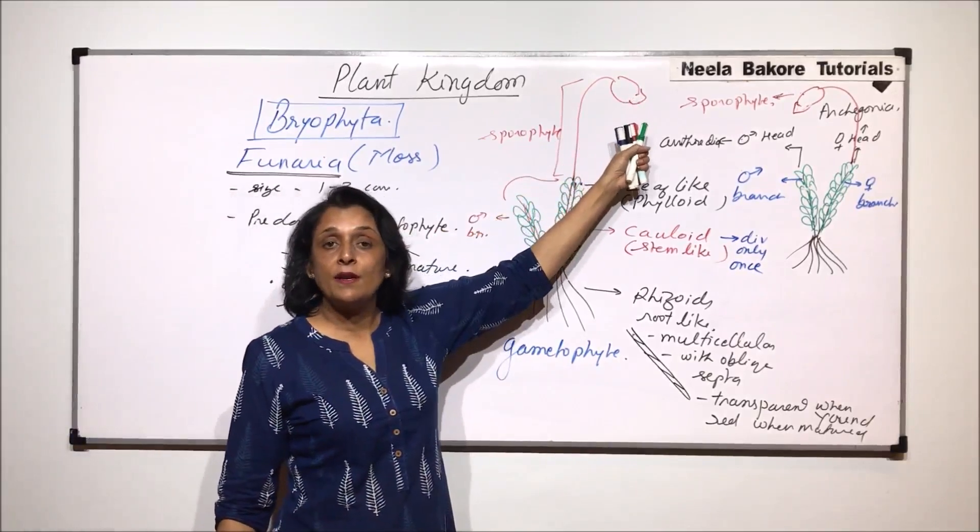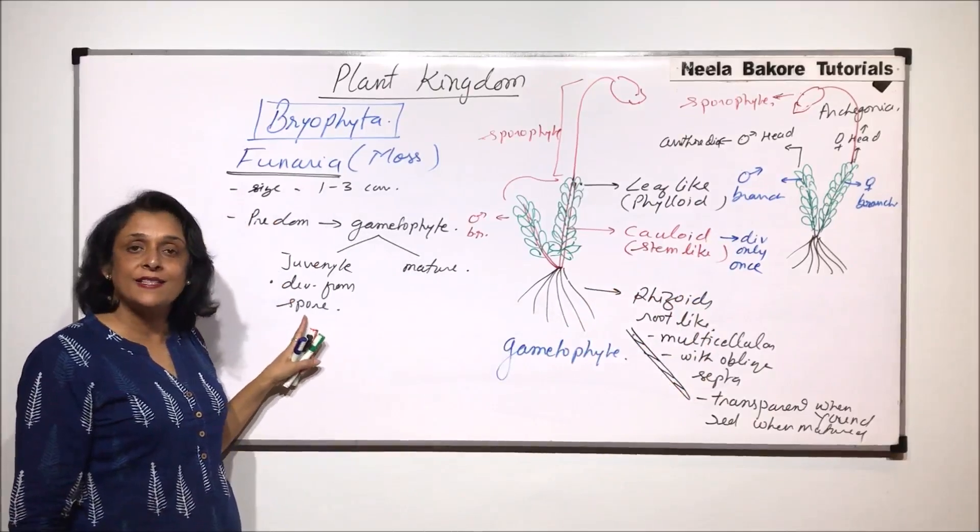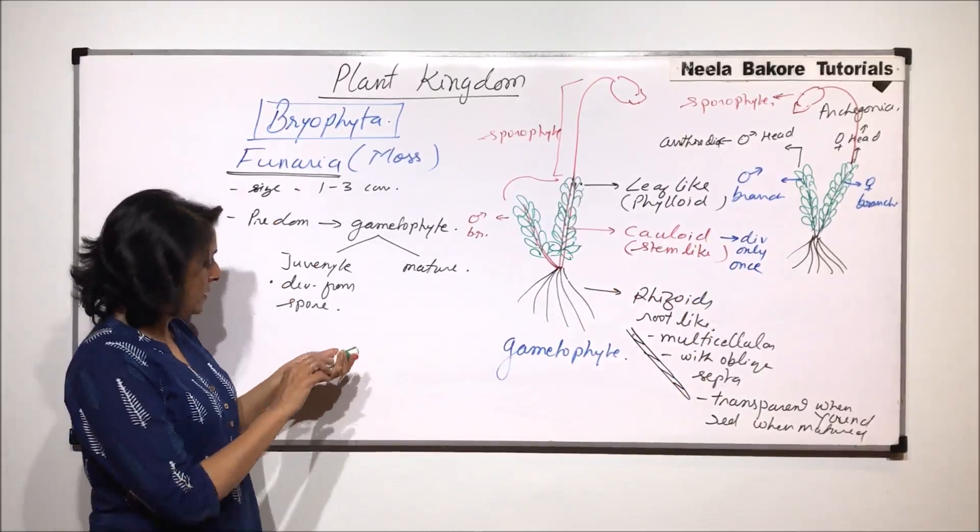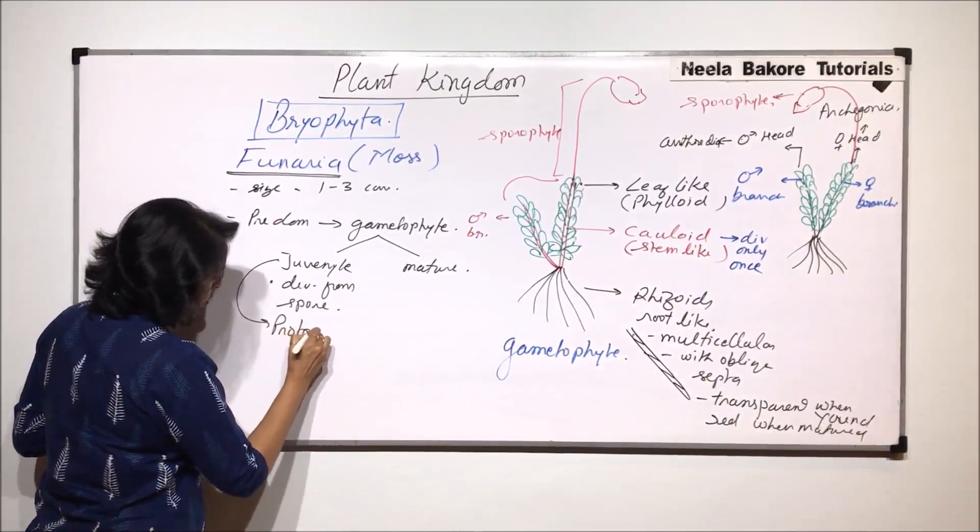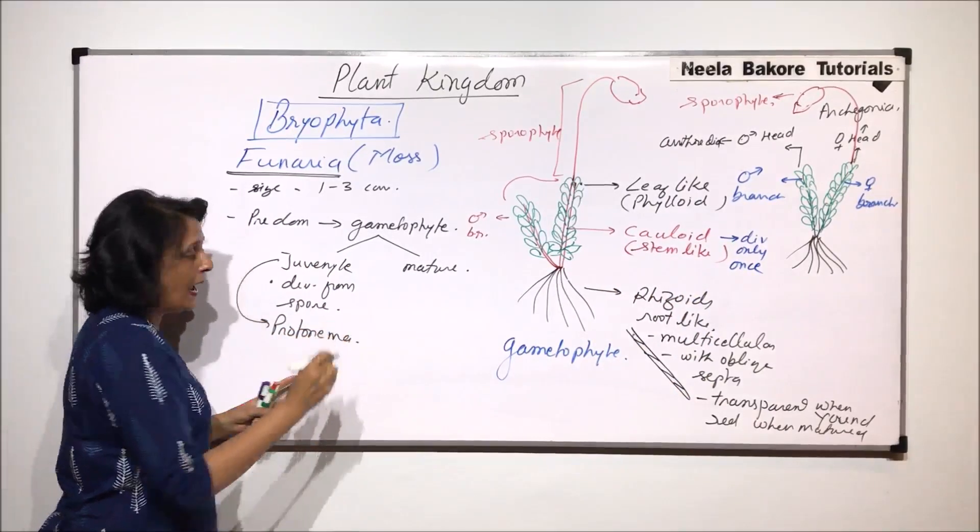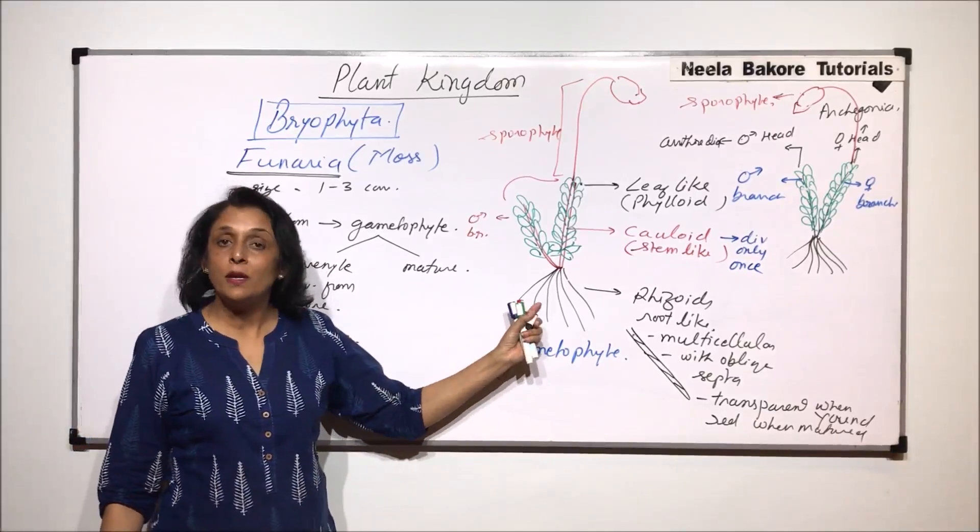From here spores will be released. These spores will give rise to this juvenile phase that is the protonema. The name of this juvenile is it is called protonema stage and from the protonema now the mature gametophyte will grow.